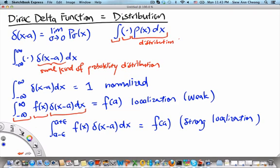So when we think of the Dirac delta function as a distribution, all we have to do is state the normalization condition, state either the weak localization condition or the strong localization condition, and then we will make full use of these two properties.